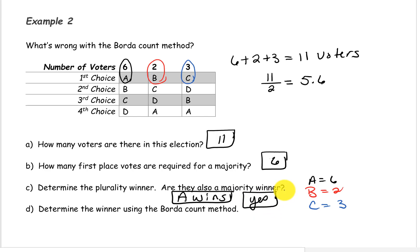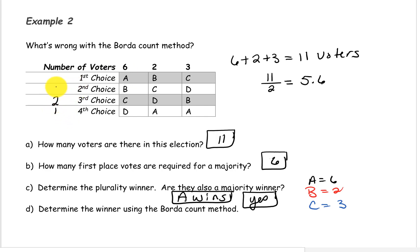Now we want to determine the winner using the Borda count method. There are a total of 4 candidates in this election, so the 4th choice will get 1 point, 3rd choice 2 points, 2nd choice 3 points, and 1st choice will get 4 points.